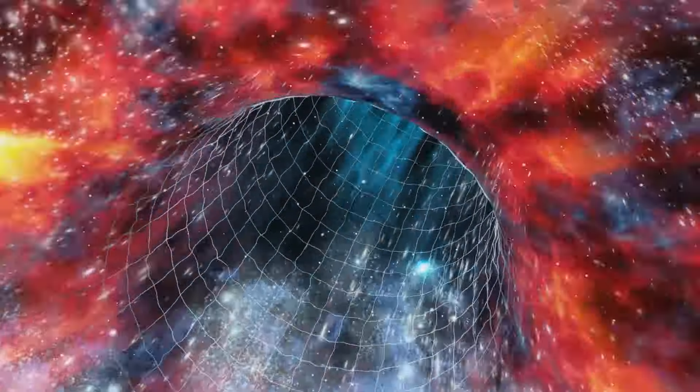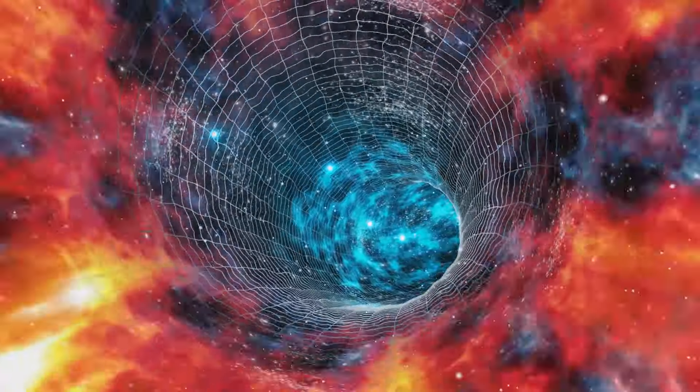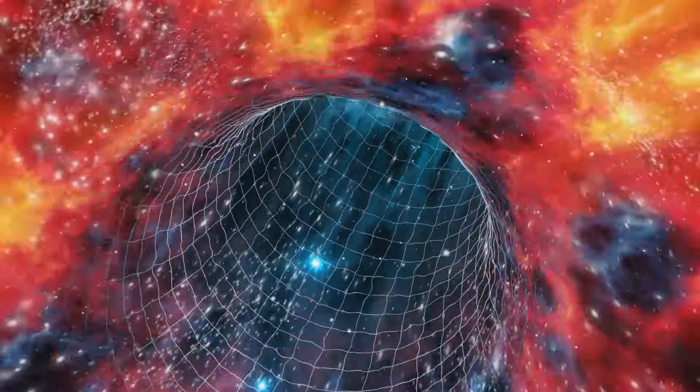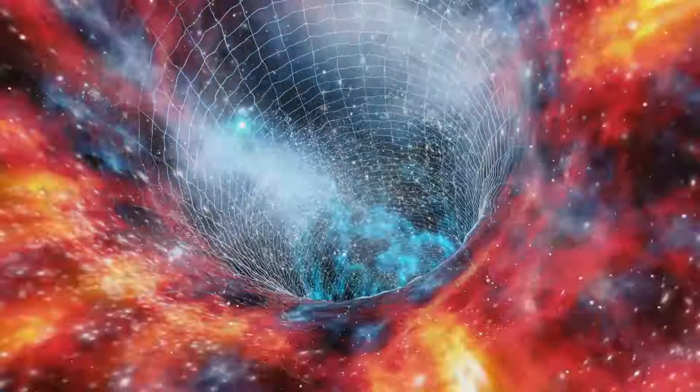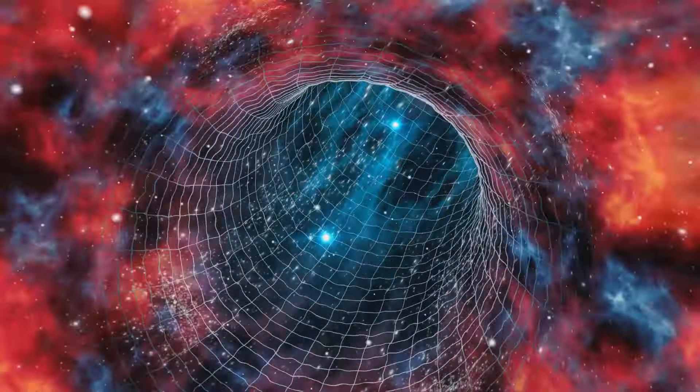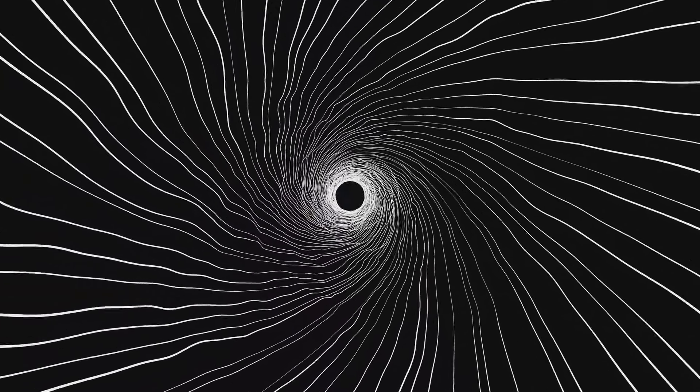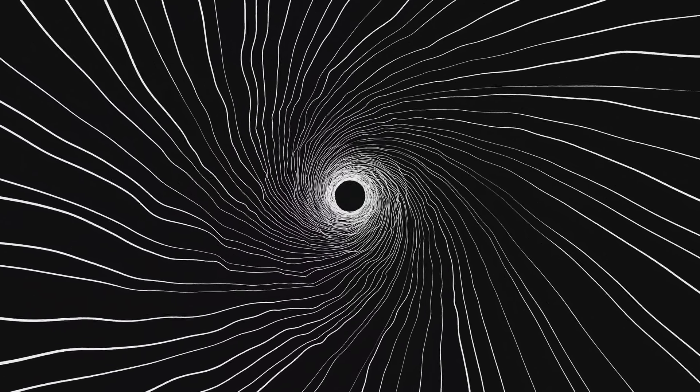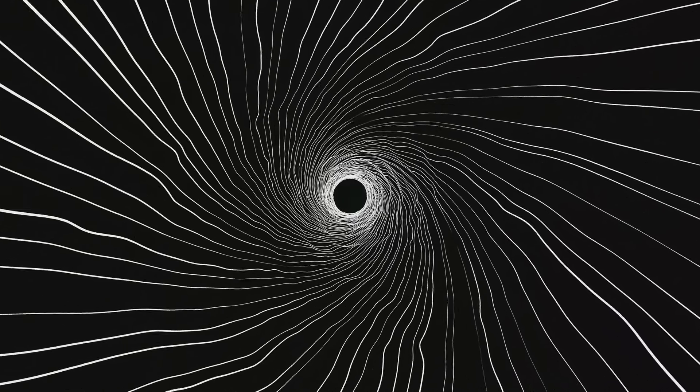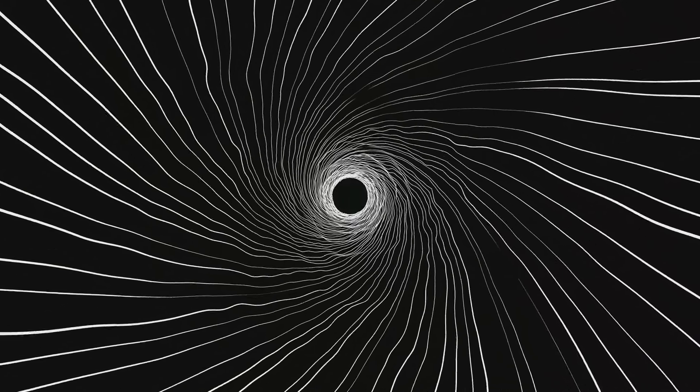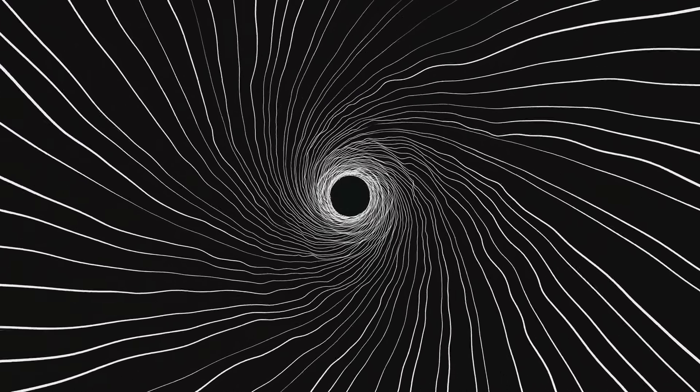Dimensions. Imagine living on a flat, two-dimensional surface like a piece of paper. In this flat land, you can only move forward, backward, left, or right. Now, imagine a three-dimensional world where you can also move up and down. Suddenly, your movement possibilities expand. Heim theory suggests that our universe may have even more dimensions, beyond the three-spatial and one-time dimension we experience, which could fundamentally change our understanding of physics.